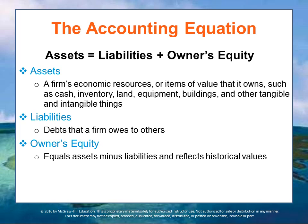The accounting equation states that assets — the total value of everything owned — equal liabilities, which is the amount of debt that helped buy those assets, plus owner's equity, which is how much the people who own the company own of those assets. So the total assets equal what you owe the banks plus what the owners own outright — essentially the owner's equity.